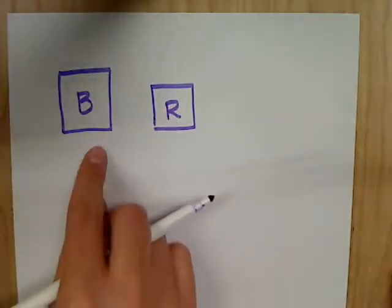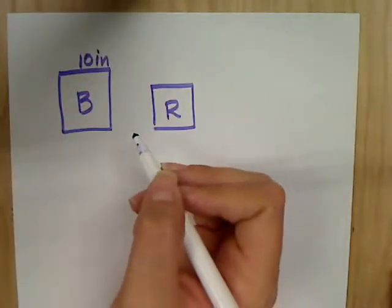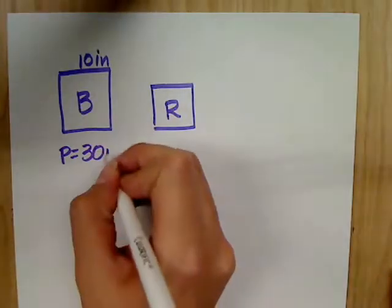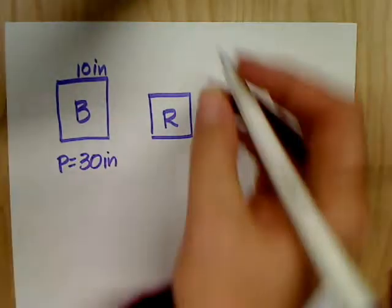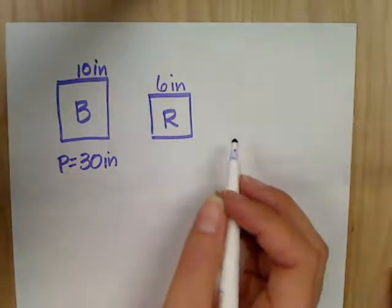The blue tile has a length of 10 inches and a perimeter of 30 inches. The red tile has a length of 6 inches. What is the perimeter of the red tile?